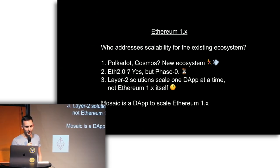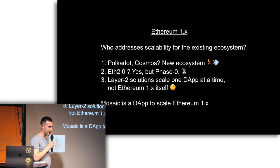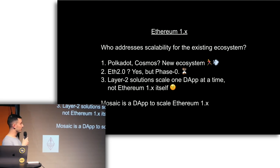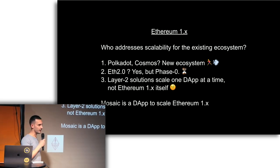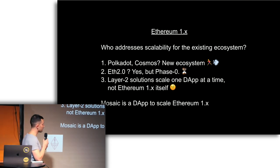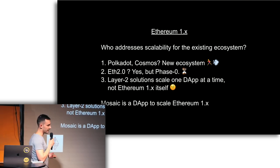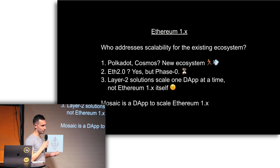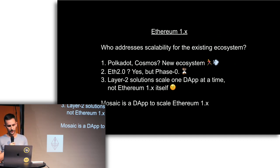Maybe this is my cynical slide. Polkadot, Cosmos — great projects, but they're building a new ecosystem. Ethereum 2.0, yes, but we've just stabilized phase zero and it will take a while before we get to future completion of what we have today. And then the layer two solutions always scale one dApp at a time, not Ethereum 1x itself. They don't aim to even extend the interface, and a lot of them even restrict what's possible back to UTXO transfers, to just token transfers. That's why Mosaic is a dApp to scale Ethereum 1x itself.